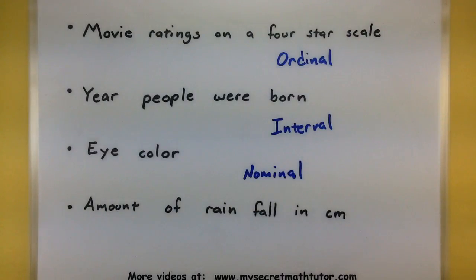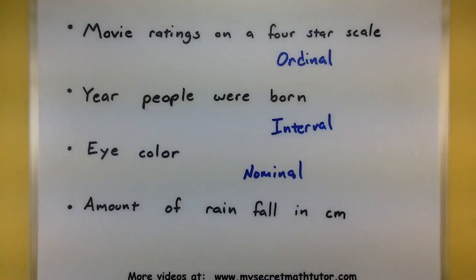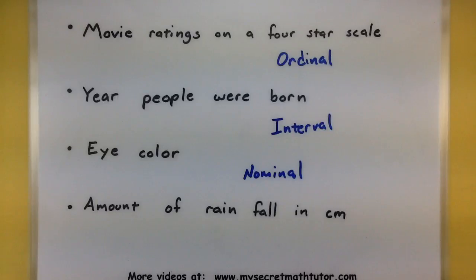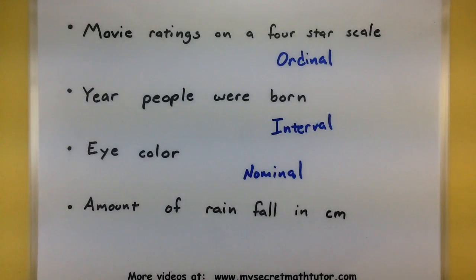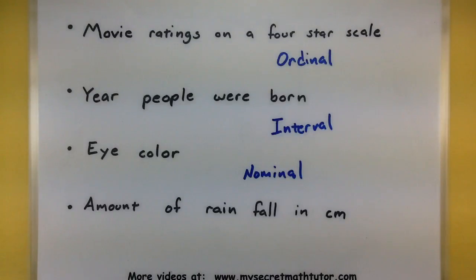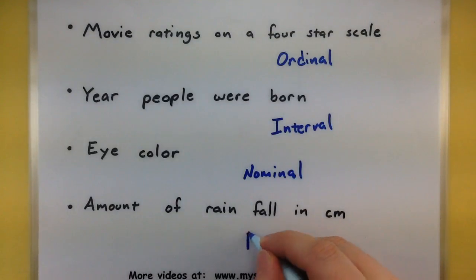Moving on: the amount of rainfall in centimeters. Maybe I'm measuring rain on different days. Can we order it? Yes — I can see the days with less rainfall and the days with more rainfall. So order matters. If I take differences in their values, does that mean something? If it rained 20 inches on one day and 10 inches on another, does that mean it rained twice as much on the 20-inch day? Yes, those differences are meaningful. Last question: does zero correspond to none of the value? If there's no rainfall on one of the days, they didn't get any rain. That means I can classify this at the ratio level.